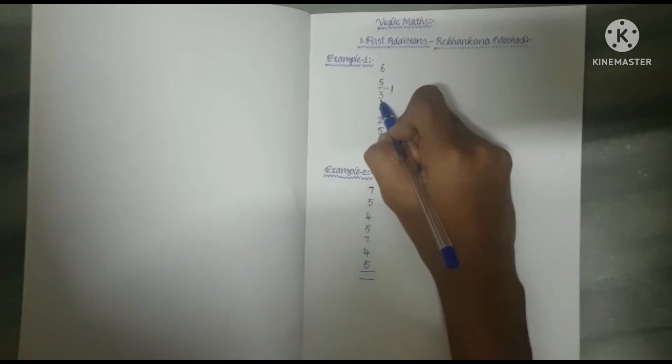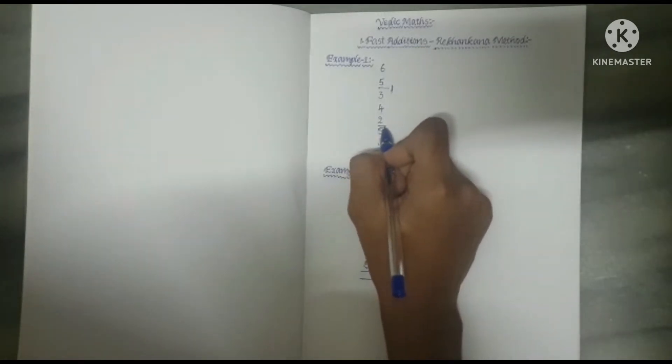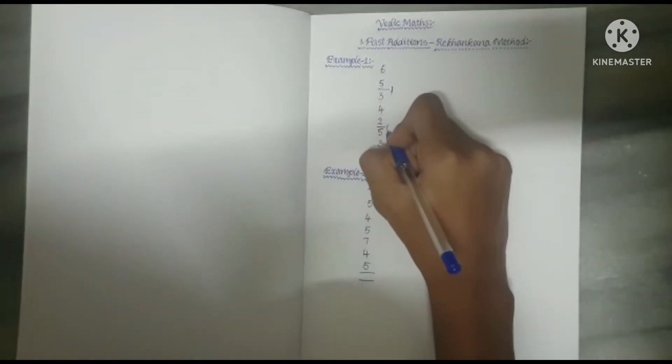Here 1 plus 3 is equal to 4. 4 plus 4 is equal to 8. 8 plus 2 is equal to 10. And again 10 is dropped as another line. And this time 0 is the balance which is left.